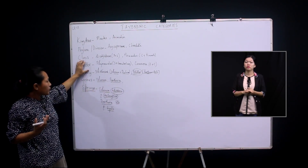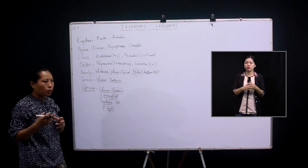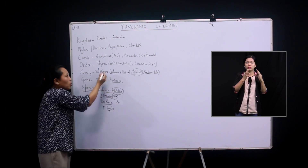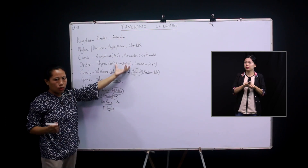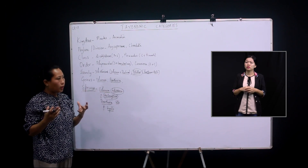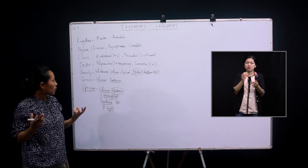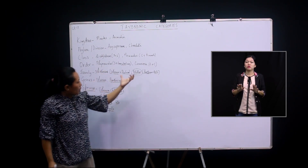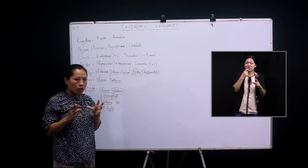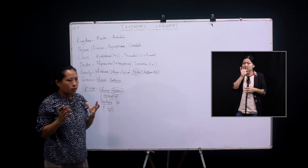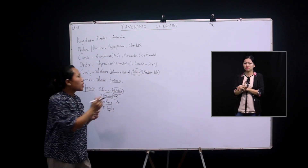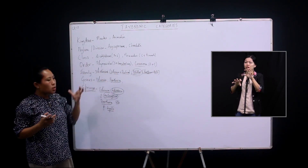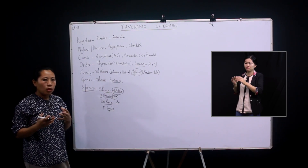The next higher category is order, which is an assemblage of closely related families. The families Solanaceae and Convolvulaceae (example: tapioca) have some common characters and are placed under the order Polemoniales. In the animal kingdom, the family Felidae and Canidae (cats and dogs) share common characters — particularly being carnivorous — and are placed under the order Carnivora.